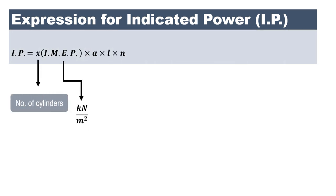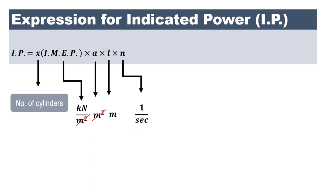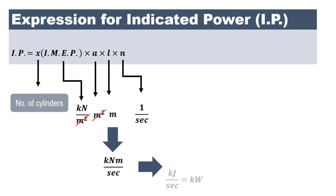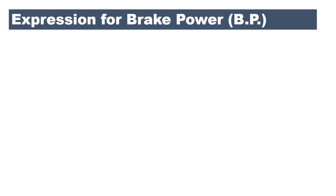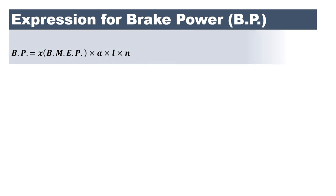So pm is in kiloNewton per meter square, area is in meter square, stroke length is in meter, and n is per second. Meter square cancels out, leaving kiloNewton·meter per second. Newton·meter is joule, so this is kilojoule per second, and joule per second is watt — therefore the unit of indicated power is kilowatt.